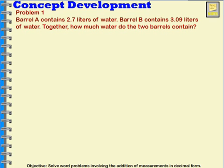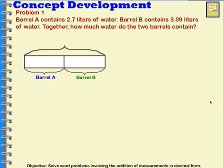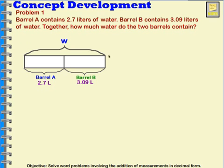To do this one, I'm going to draw a tape diagram that shows that I have two parts. I have Barrel A and I have Barrel B. Together, those barrels would tell me how much water they contain. Barrel A contains 2 and 7 tenths liters. Barrel B contains 3 and 9 hundredths liters. I need to know how much they contain altogether.